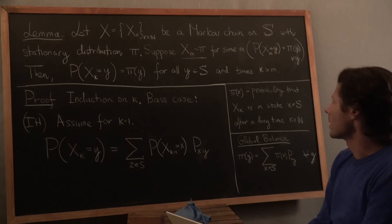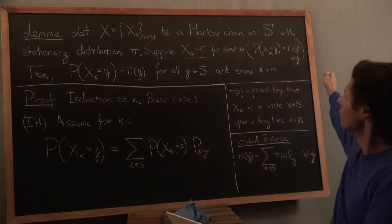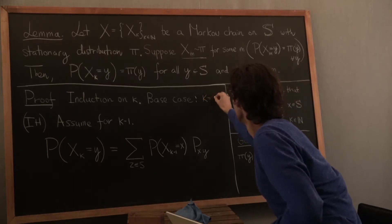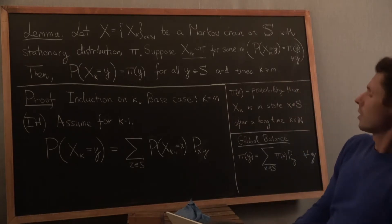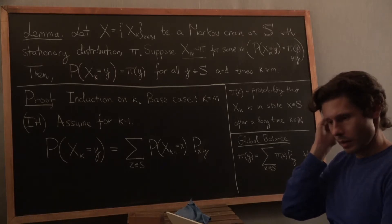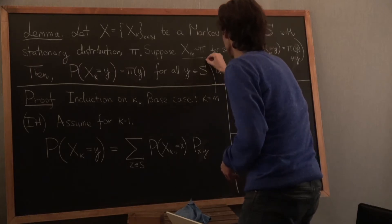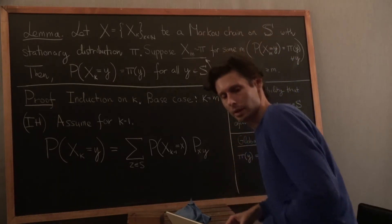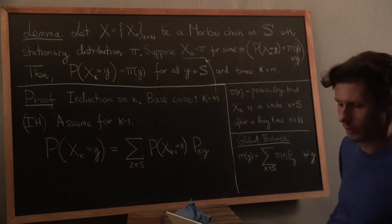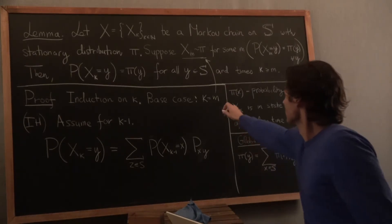What's the base case? Usually it's zero, but here we're starting at m and going forward, so the base case is k equals m. We need to prove it — but you may notice there's not much to prove. The hypothesis already gives us the right condition for k equals m. We already have the result, so the base case is essentially given. Nothing to prove. Check.